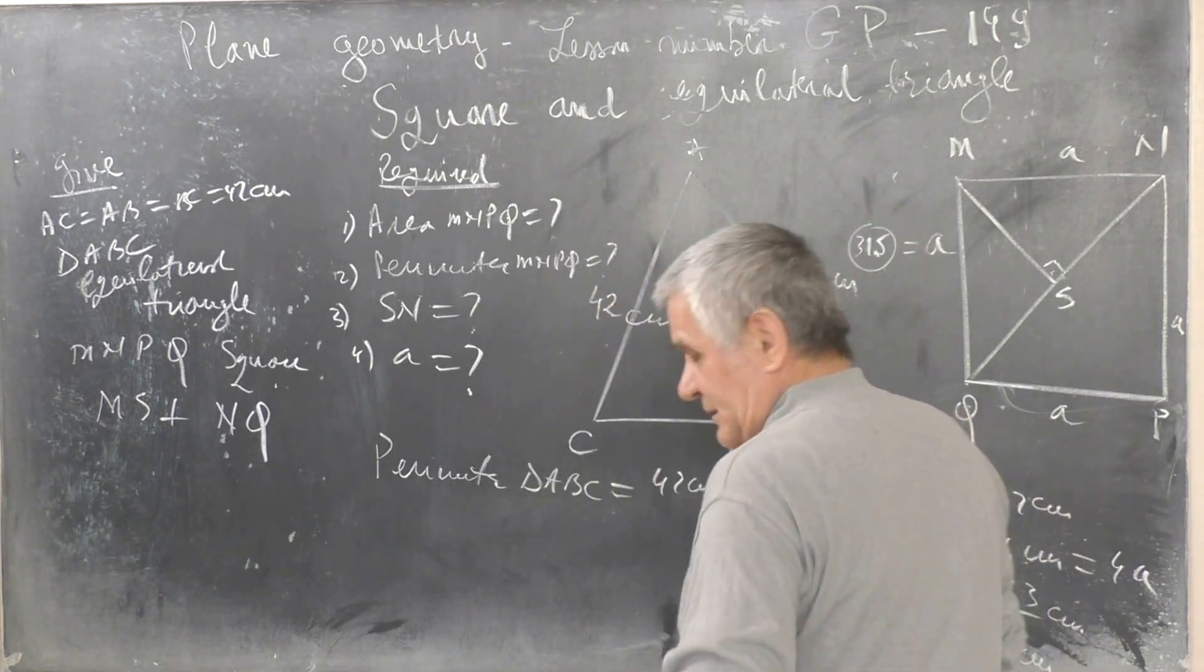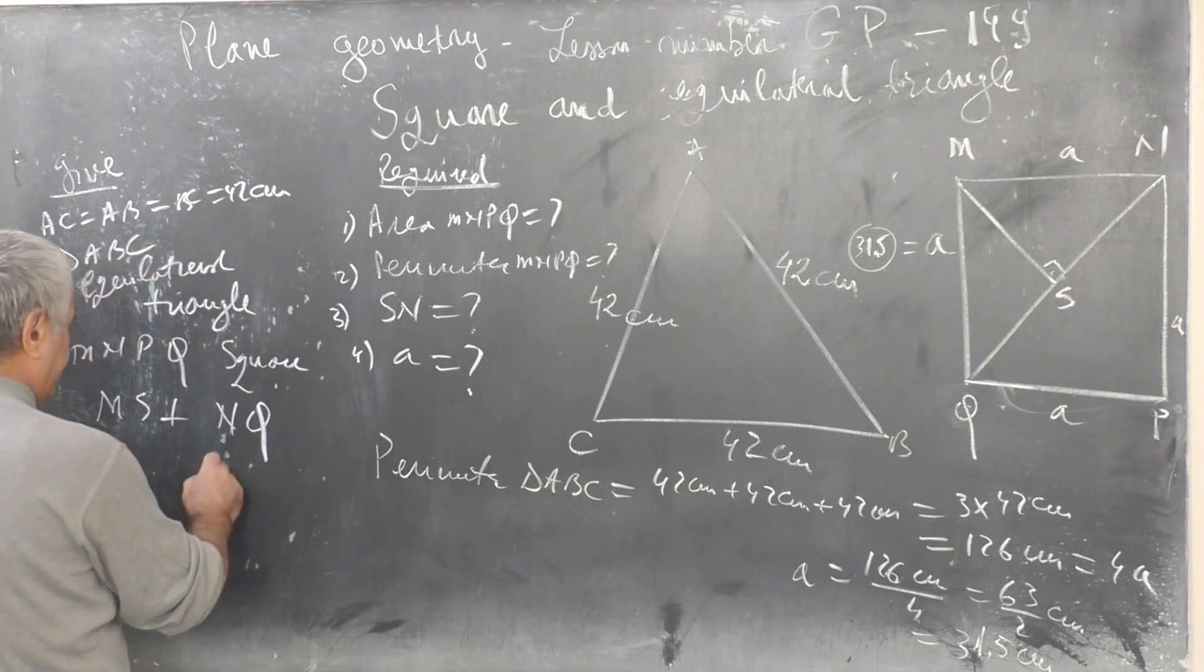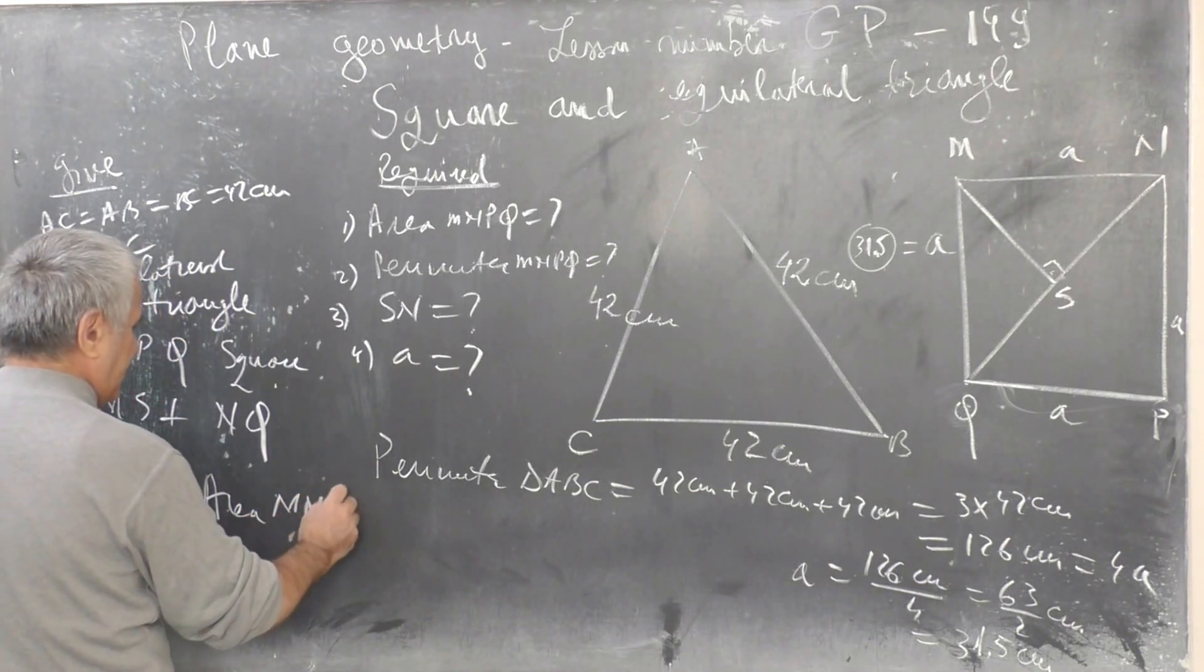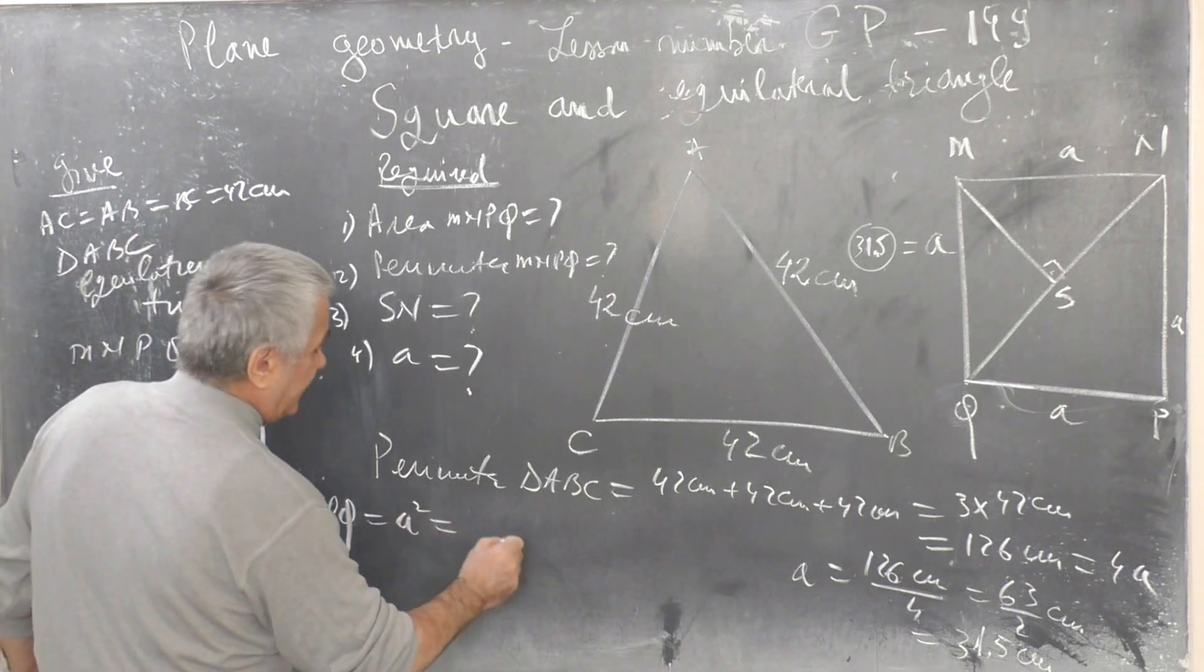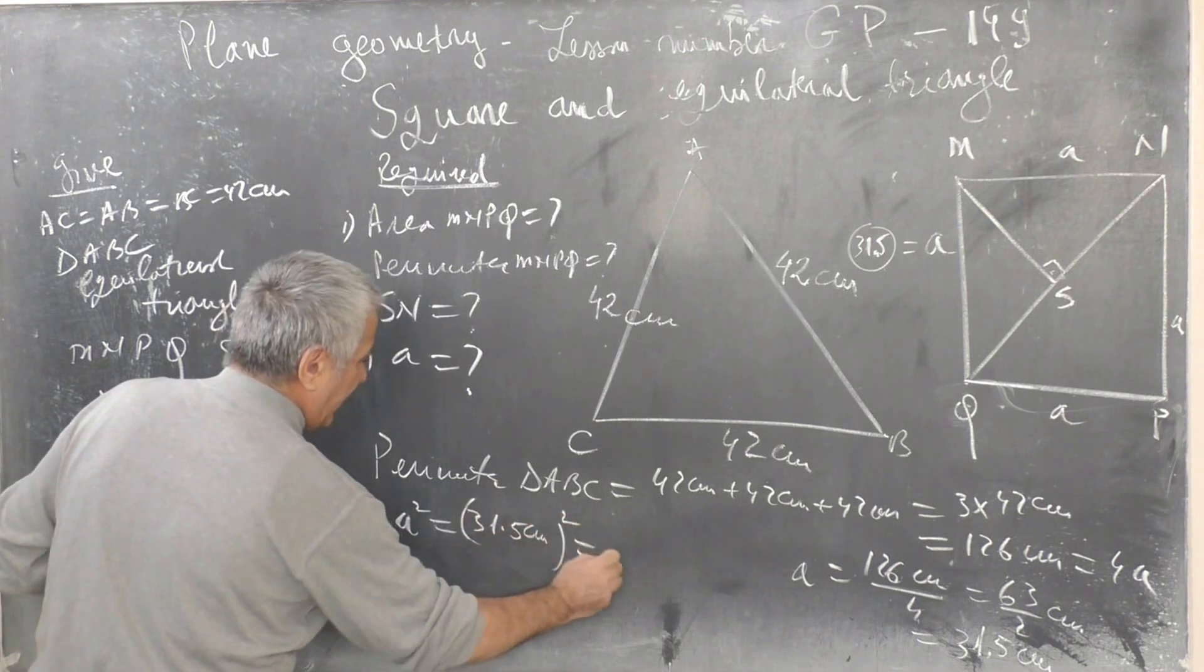The area is A squared. A squared equals 31.5 cm squared.